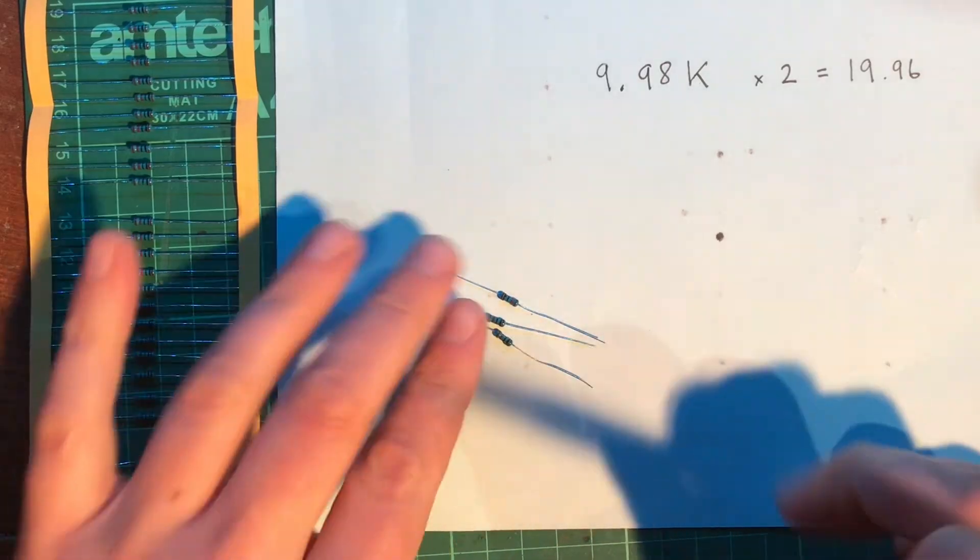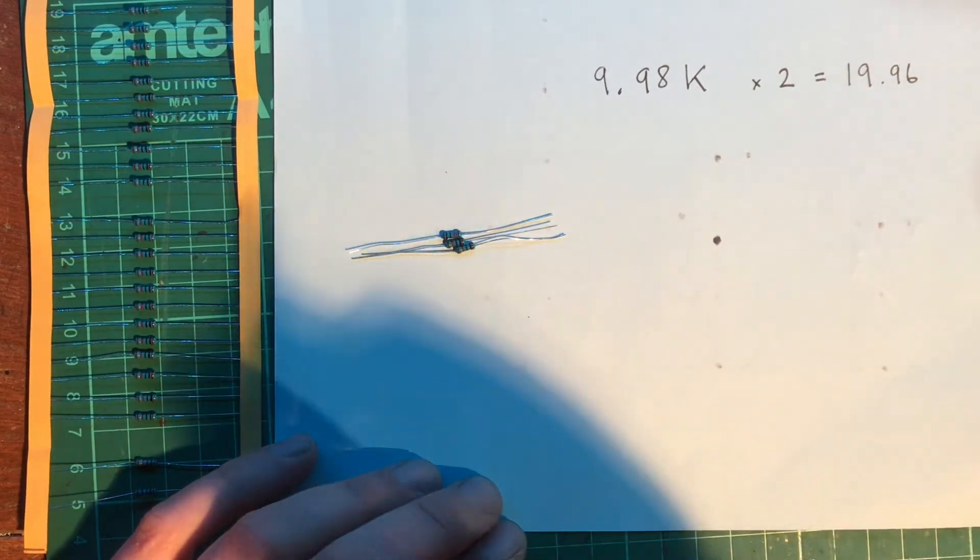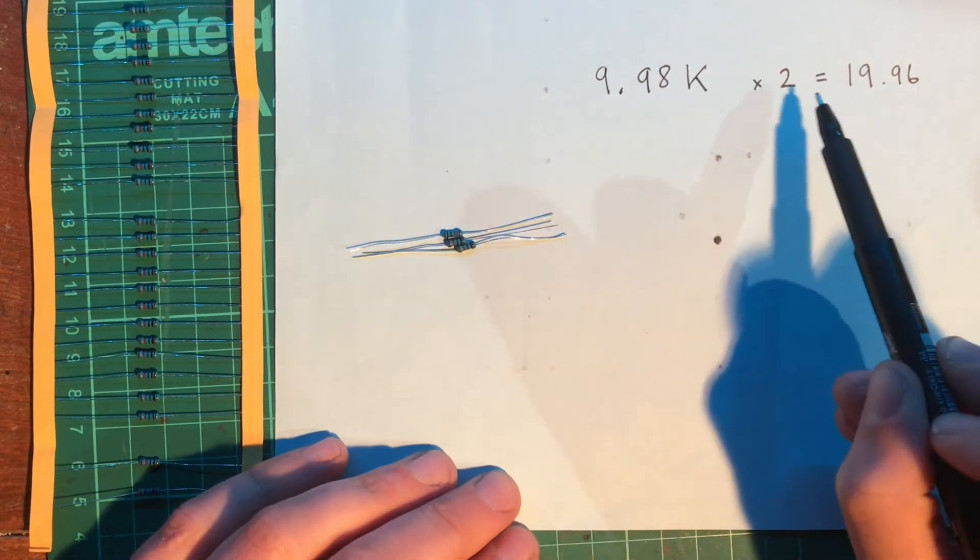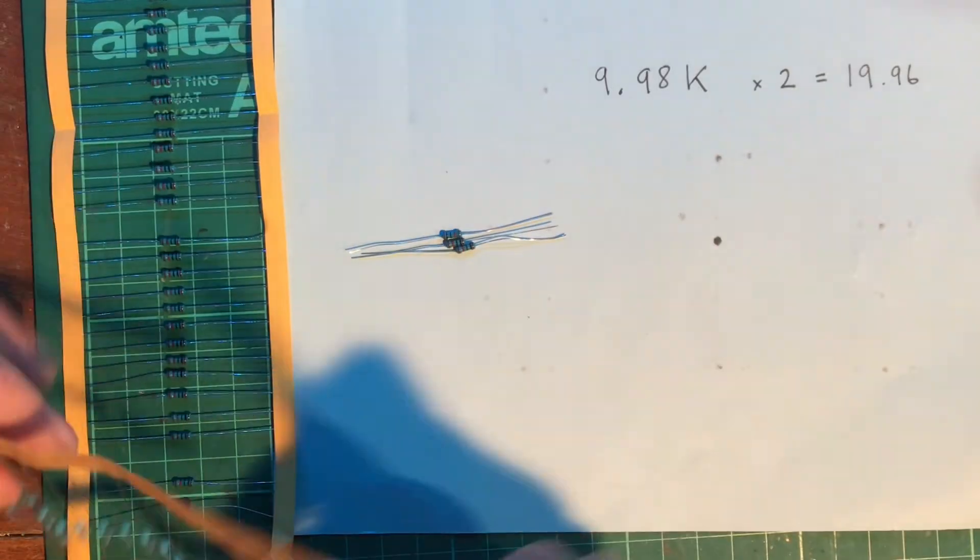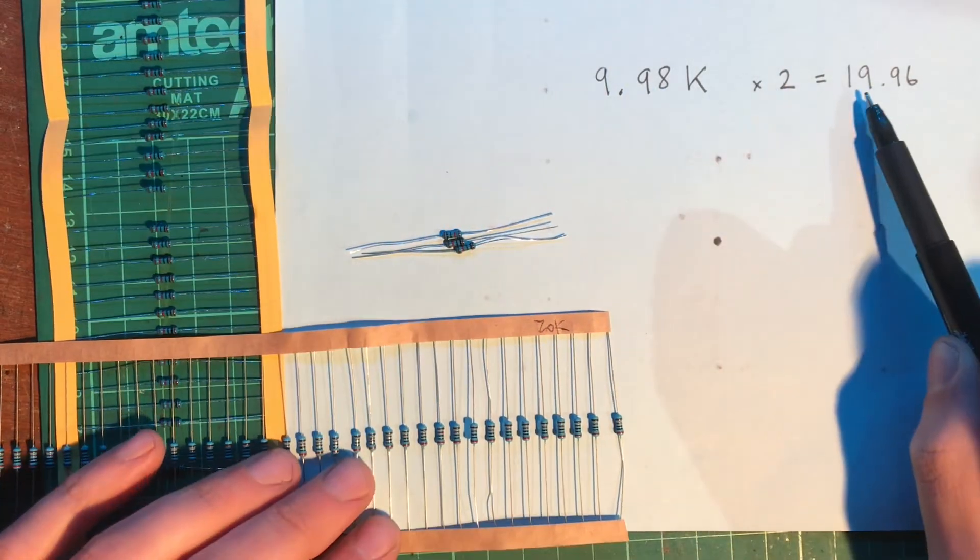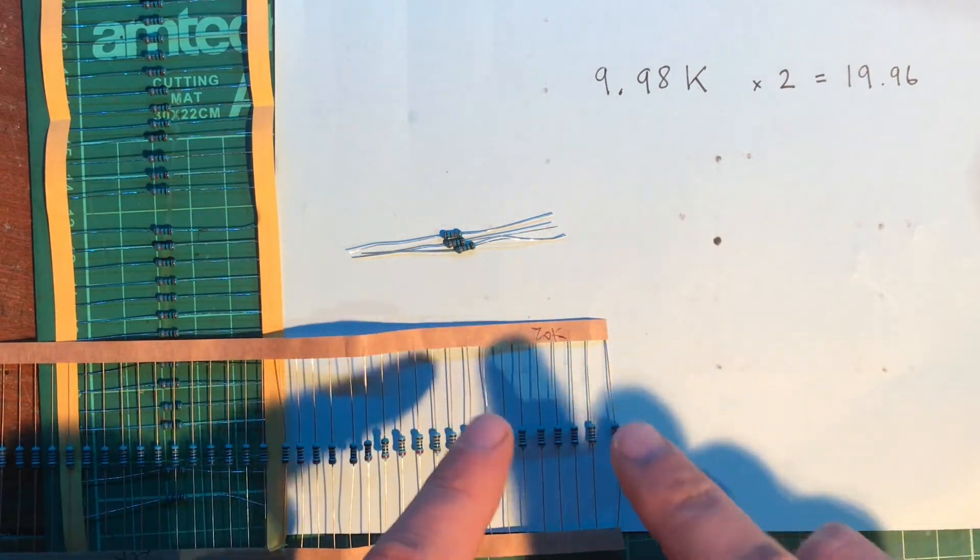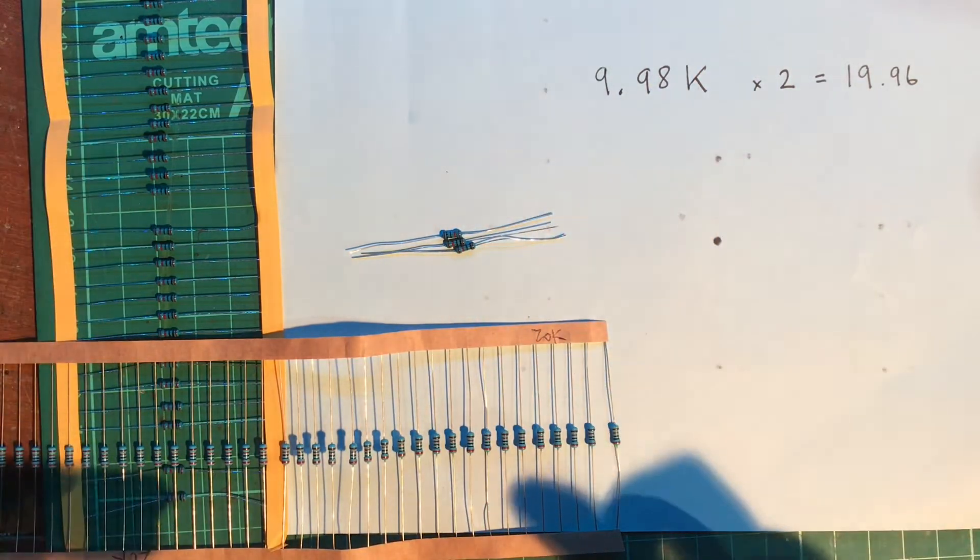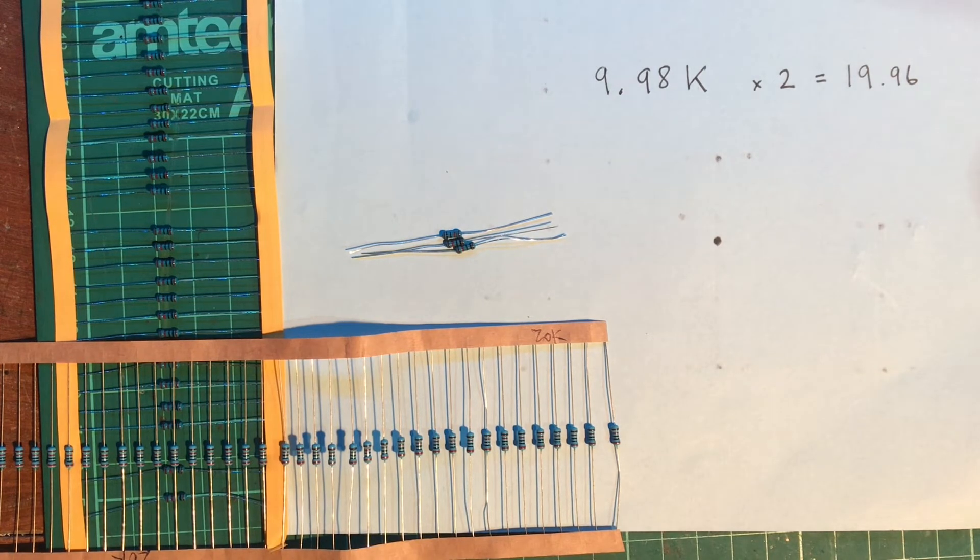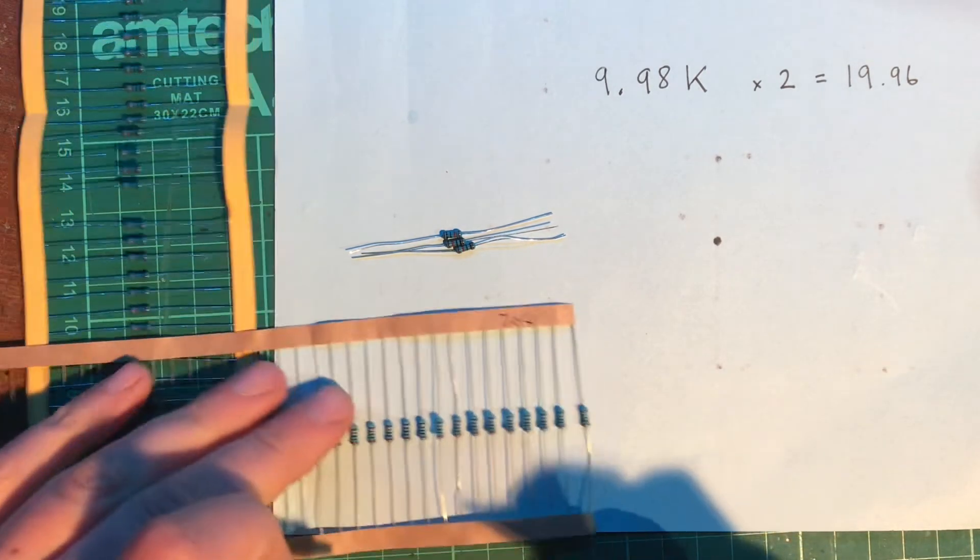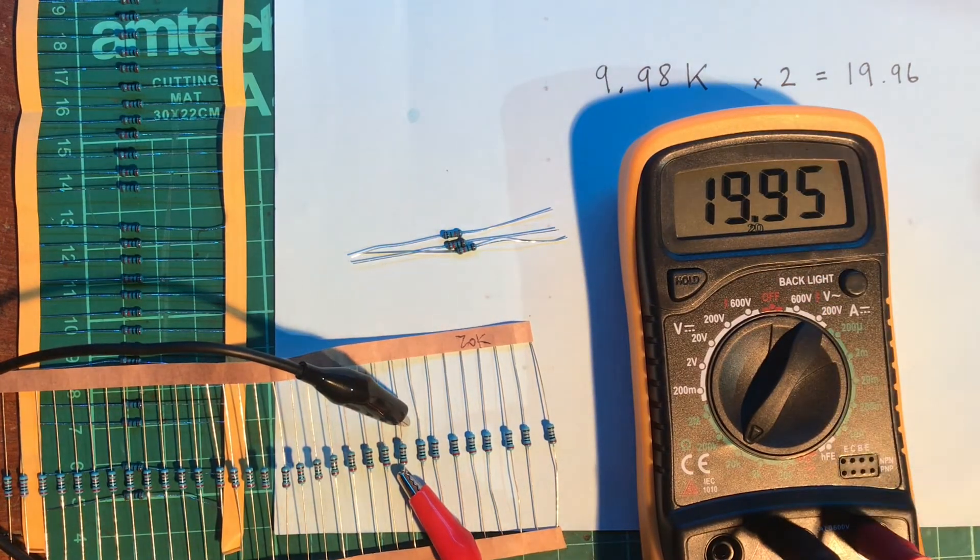I'm back with three new resistors and these ones are all 9.98k. Now if we want to find the 20k what you do is times that by two and that gives you 19.96. So the actual value that we're looking for of the 20k resistor is 19.96. Let's start going through those and see if we can find one that is bang on. There we go 19.956, that's great, that's exactly what we need.